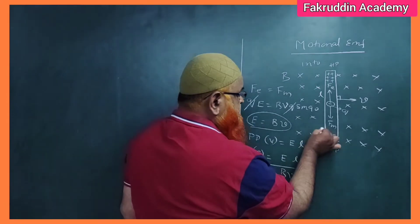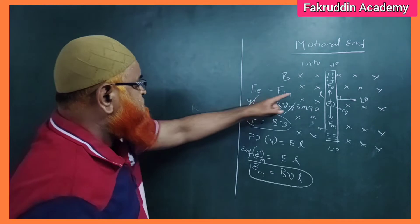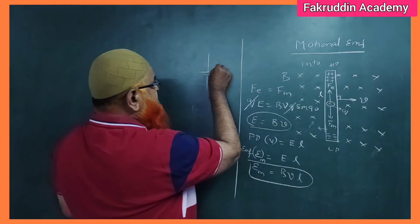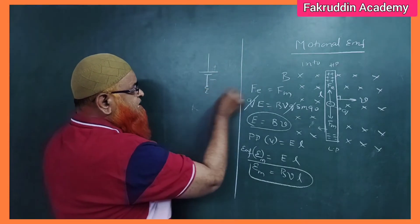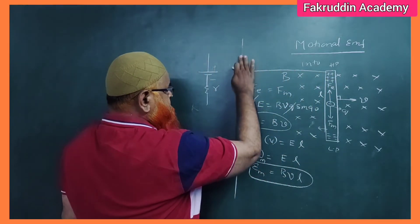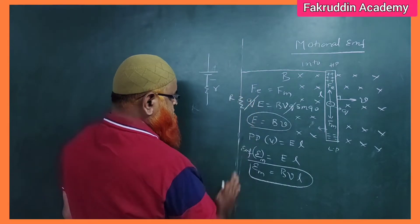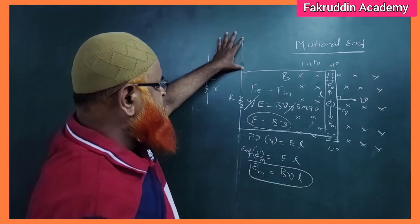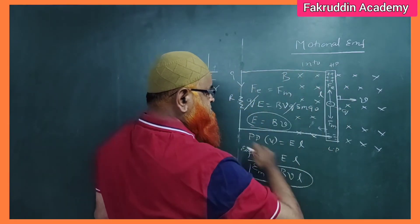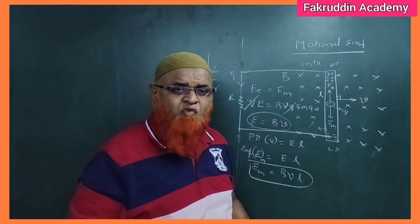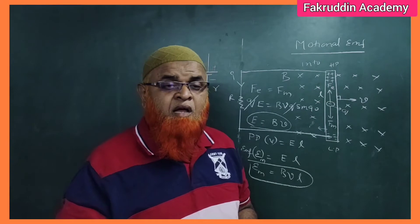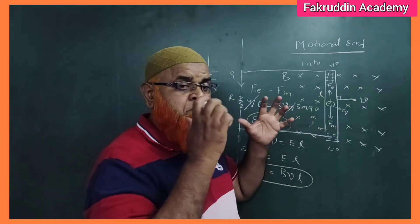Now, if this rod has certain resistance, let us take a new diagram. When this rod moves in a magnetic field, it behaves like a battery — the upper part is positive and the lower part is negative. It also has an internal resistance in the rod given by small r. If you connect this rod with an external wire having resistance R, current flows from higher to lower potential. Without any power source, just by moving the rod in a magnetic field, we are producing electric current.